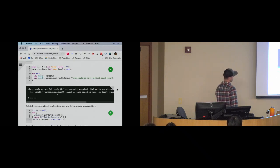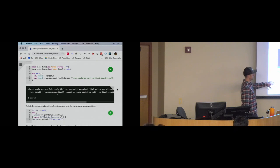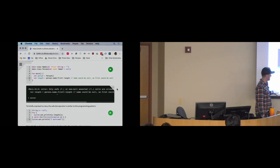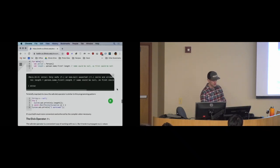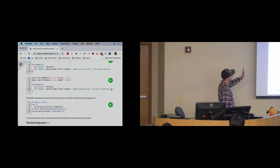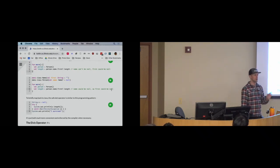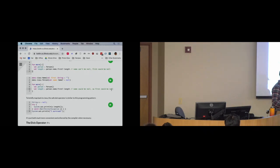In Java, the equivalent approach is to wrap unsafe property access inside a try-catch so that if there's a null pointer exception, you can still continue executing. The difference is that Kotlin's safe dot operator is far more elegant and convenient, and the compiler forces you to use it when you need it. Kotlin's goal is basically: if your code compiles, it has to be handling null values safely.